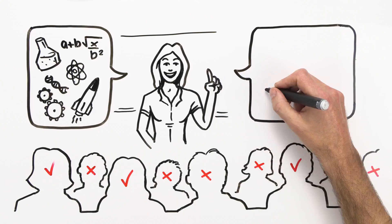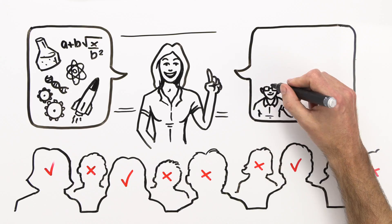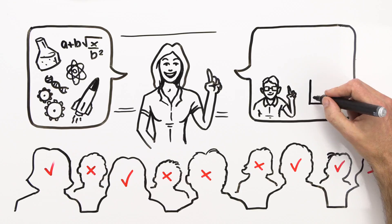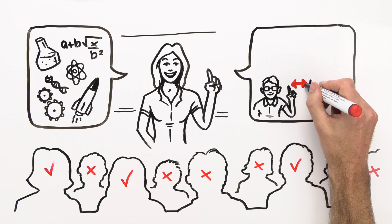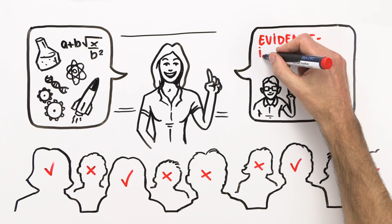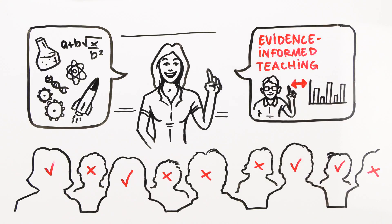In fact, the research evidence suggests differently, and a major review of studies published in 2014 found that, on average, students in classes where teachers used evidence-informed teaching methods scored higher and failed less than students taught in more traditional ways.